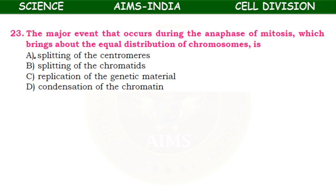The major event during anaphase of mitosis which brings about equal distribution of chromosomes is — splitting of centromeres, splitting of chromatids, replication of genetic material, or condensation of chromatin? It is the splitting of centromeres which breaks and forms the daughter chromosomes. During anaphase of mitosis, equal distribution of chromosomes takes place by splitting of centromeres.